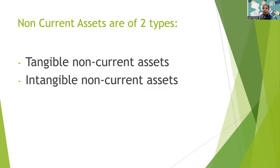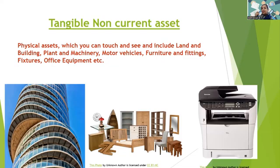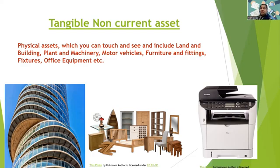Now non-current assets are of two types: tangible non-current assets and intangible non-current assets. Tangible means something which you can touch and which you can see. So tangible non-current assets are the physical assets. Examples from our list include land and building, plant and machinery, motor vehicles, furniture and fittings, office equipment, and fixtures — all those are our tangible non-current assets.